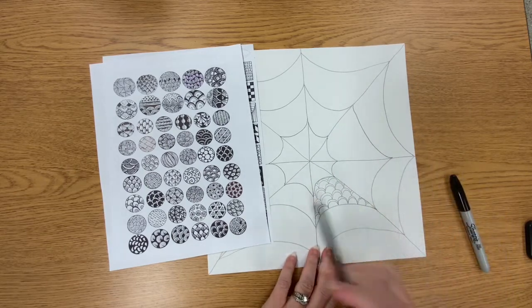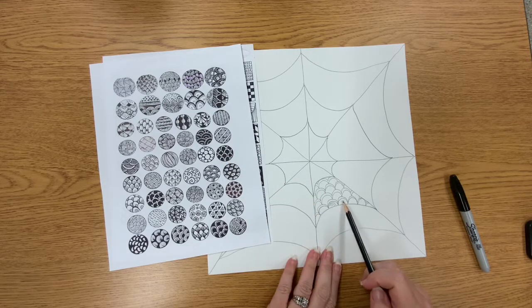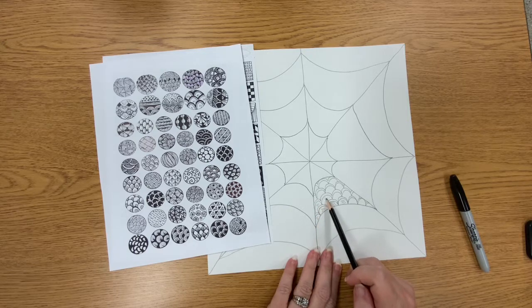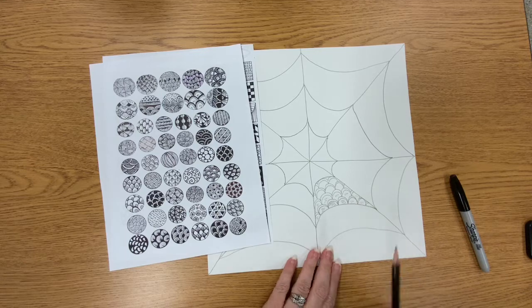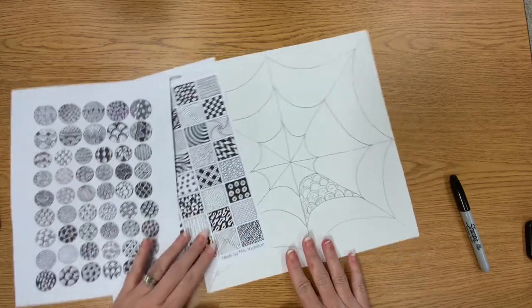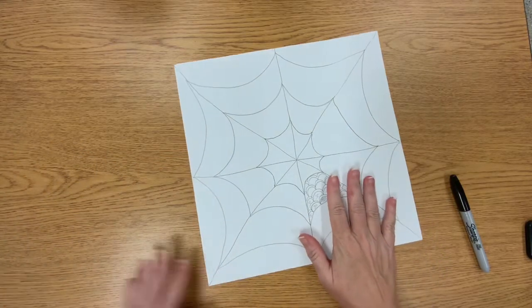When I fill it in, I would color in the big section. So I can go ahead and do a little line in there to remind myself that when I fill it in, I'm going to color in those parts.